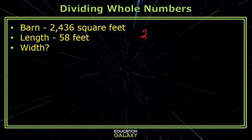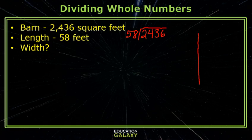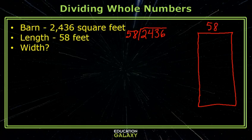So our problem is 2,436 divided by 58. The first thing that you need to do when you're using an area model to help you with division is to draw a rectangle. Since the length of the barn is 58, I'll write 58 at the top of the rectangle.